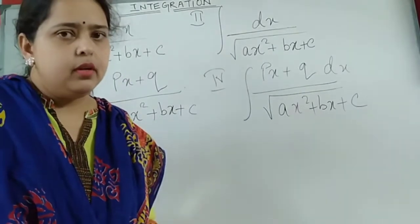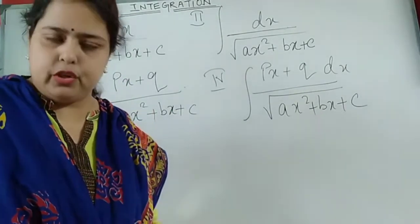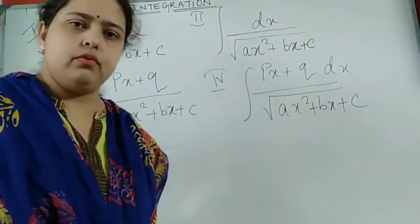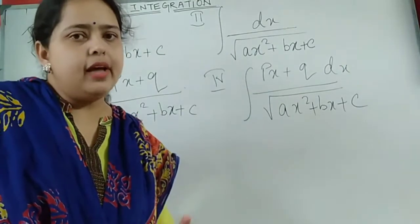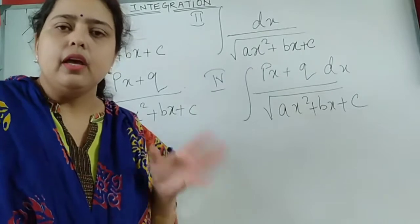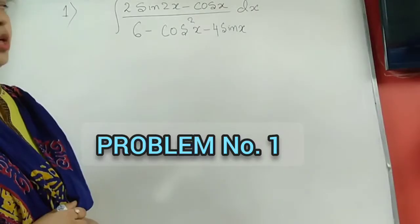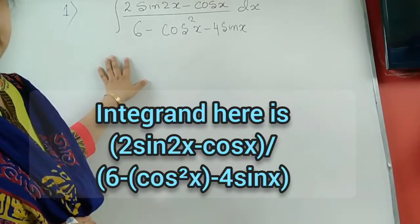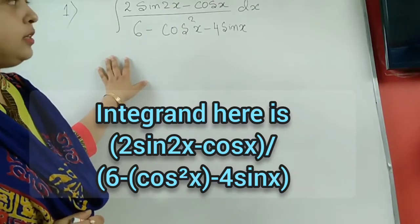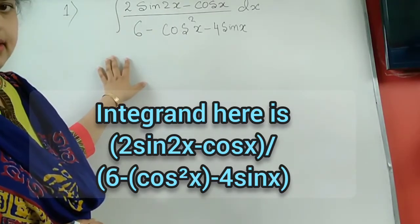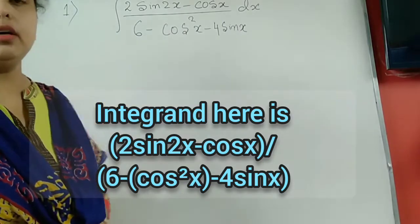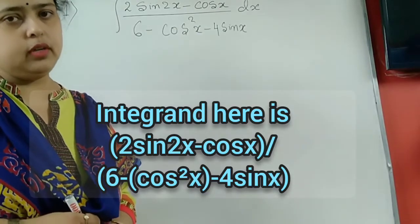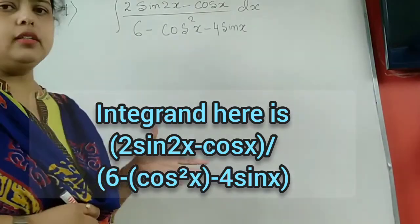I will be taking a problem where we first go for a substitution, and then that particular substitution will help me get the required form. I will manipulate the integrand to get a standard integral. The first problem: in the numerator you can see it is 2sin(2x) minus cos(x) dx, and in the denominator we again have a combination of sin and cos.